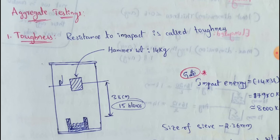We need to check the properties. As per IRC, we need to provide the range. The value is the range. Aggregate is used in road construction work.